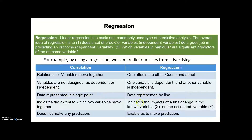In correlation, data is represented as a single point, but in regression data is represented by a line — we call it the regression line. Correlation indicates the extent to which two variables move together, whereas regression indicates the impact of a unit change in the known variable (x) on the estimated variable (y). So correlation does not make predictions for us, but regression enables us to make predictions about the dependent or outcome variable.